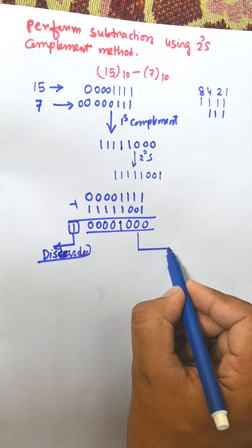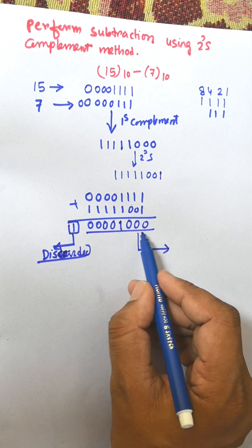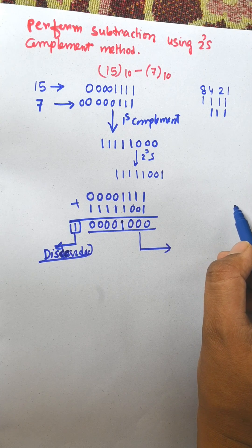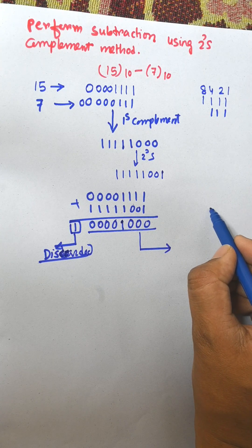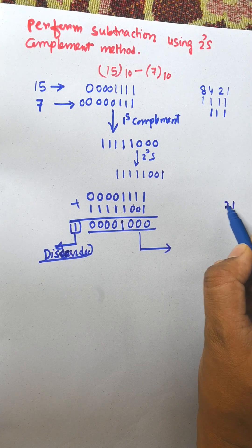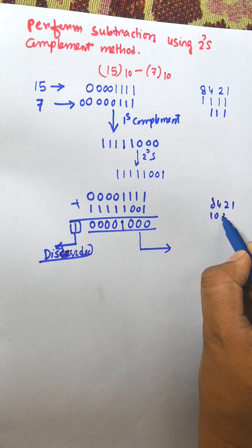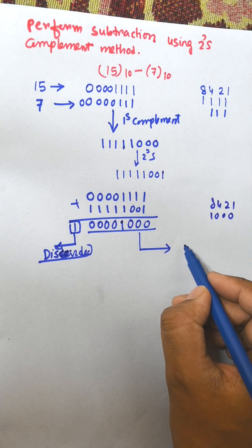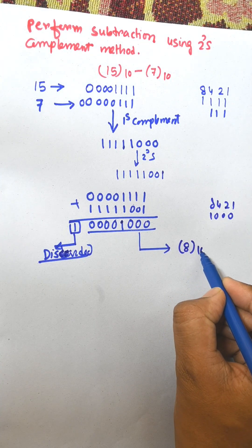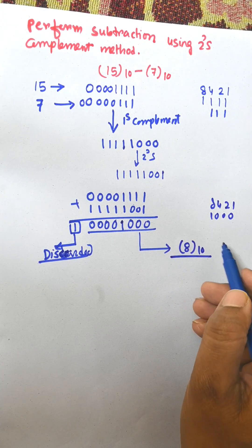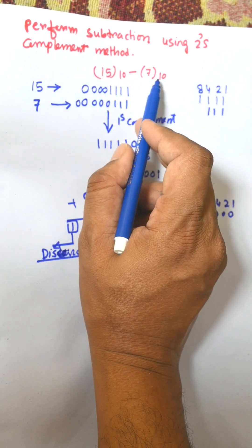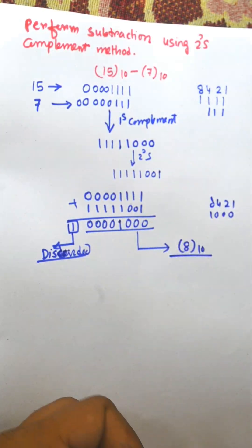The remaining 8-bit result is then converted from binary to decimal: 1 2 4 8 — that is equal to 8. So this is the answer of the subtraction 15 minus 7, which equals 8.